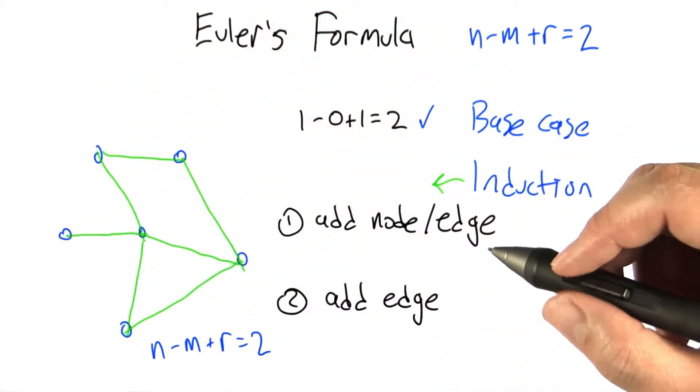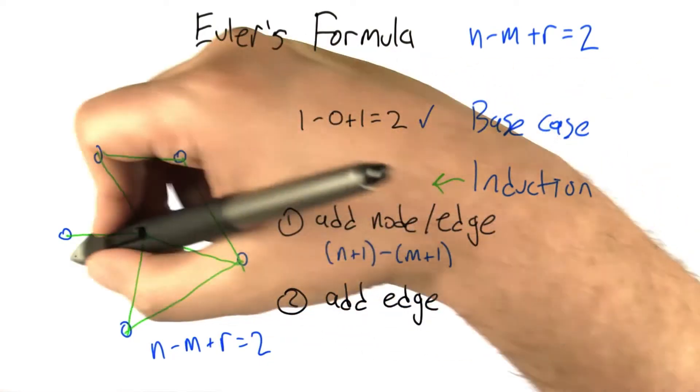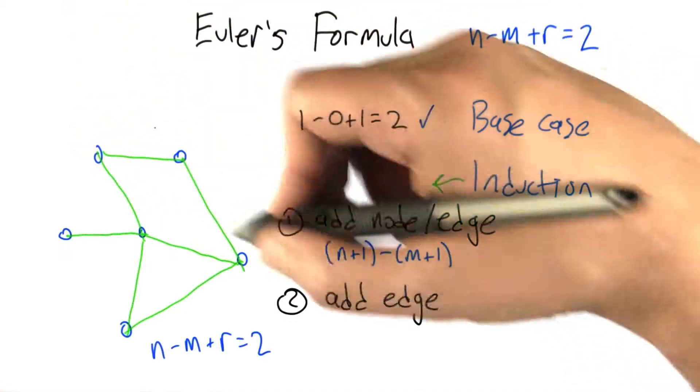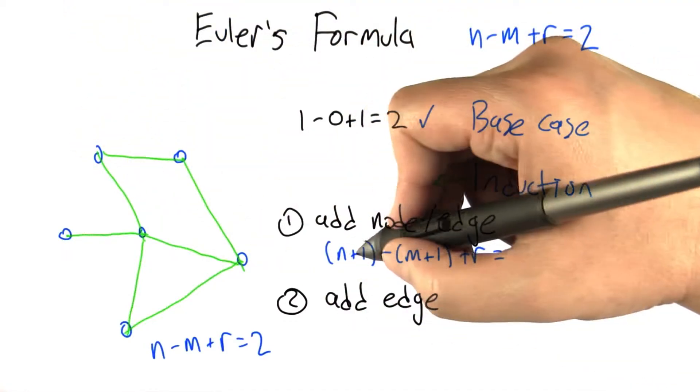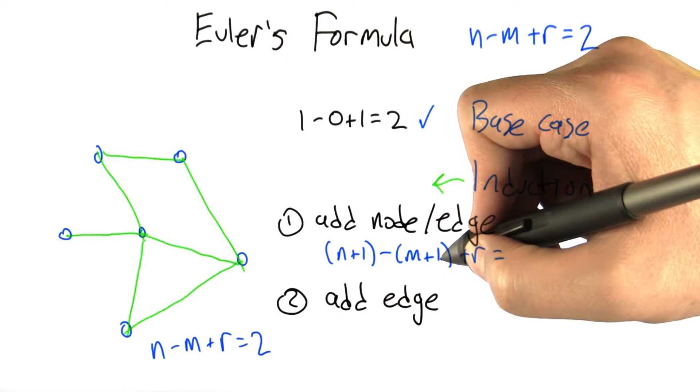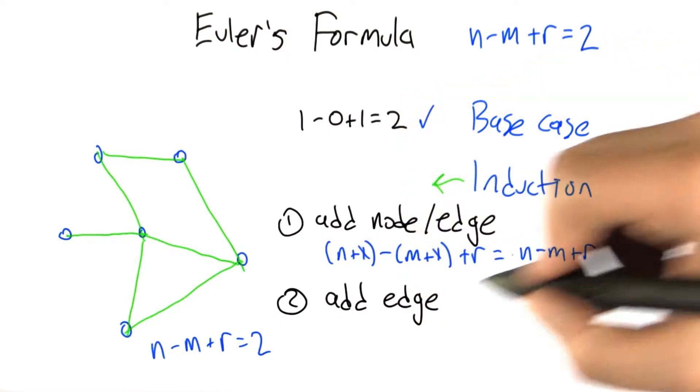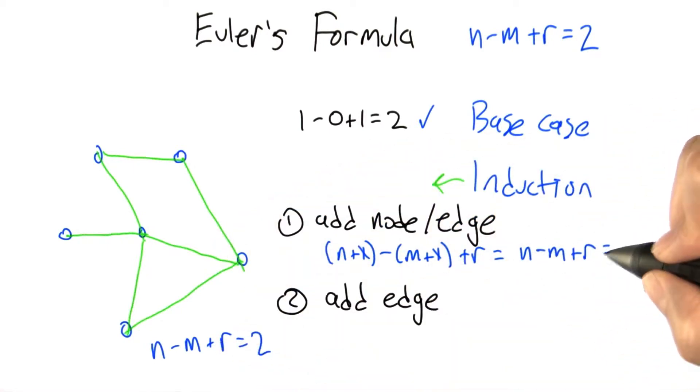What happens to n, m, and r? Well, we have one new node and one new edge, but the number of regions hasn't changed. We're just jutting into some region inside or outside, but it doesn't change the total number of regions. n plus 1 minus m plus 1. These ones cancel and we get n minus m plus r, which by our inductive hypothesis we said is 2. So in that case, the formula still holds.